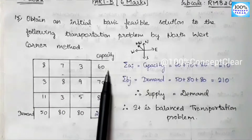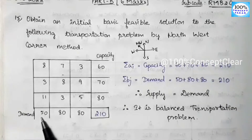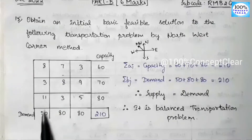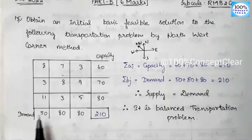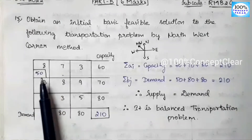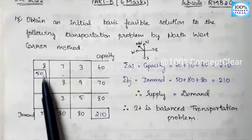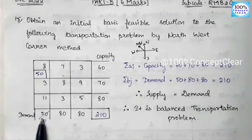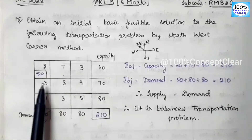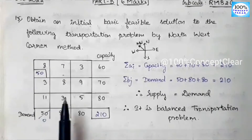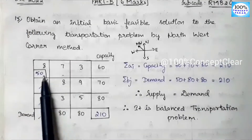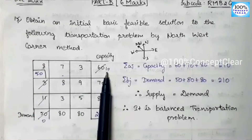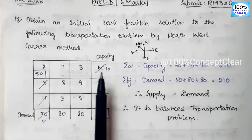For the first allocation, we compare supply and demand. Supply is 60 and demand is 50. The least value is 50, so we allocate 50 to the north-west corner cell. We then cancel demand 50. Since demand becomes 0, we cancel all values in that column. From supply, we subtract: 60 minus 50 equals 10. So the remaining supply is 10. The first allocation is complete.